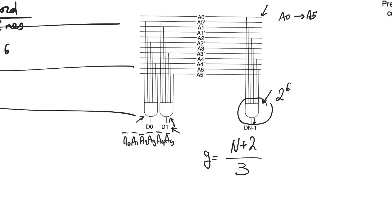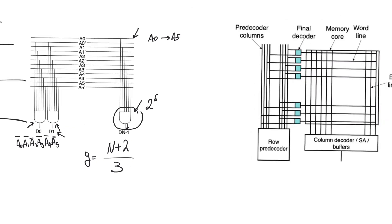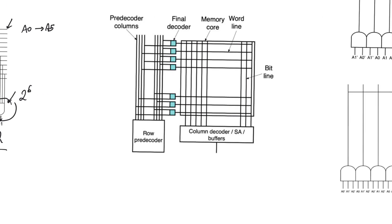We are making a huge assumption that arbitrarily large NAND gates are available in the standard cell library, which is usually not the case. There are typically only small NAND gates available, so if you want a large fan-in NAND gate you must use smaller gates to build it. If the synthesizer is going to do that anyway, why not do it manually and open up the chance for optimization in both layout and delay? The way to do this is to divide the row decoder into a pre-decoder and a final decoder.